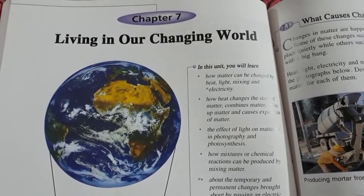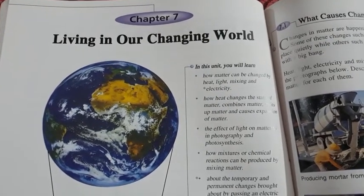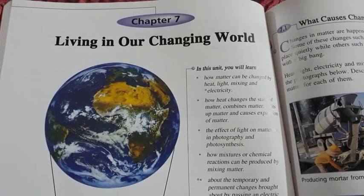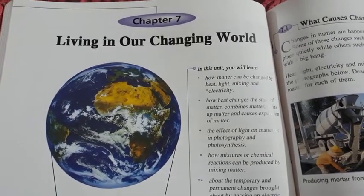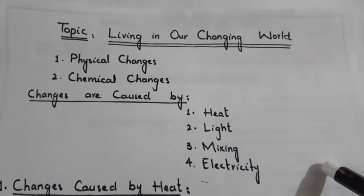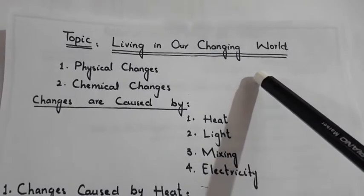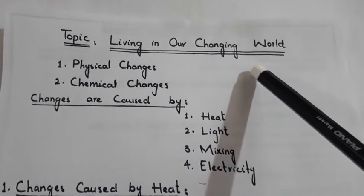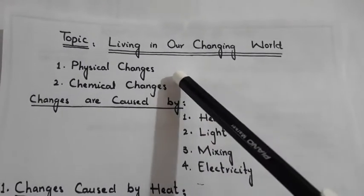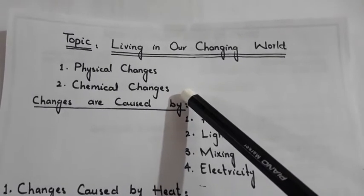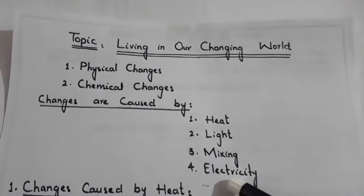The factors that affect the changing of matter are heat, light, electricity, and mixing. We will read about the changes caused by heat, light, mixing, and electricity one by one. In this chapter we will understand about the changes in matter — whether they are physical changes or chemical changes — and what causes them.